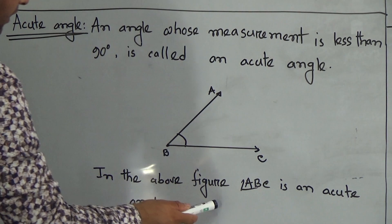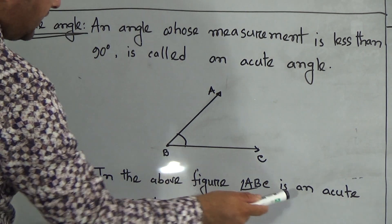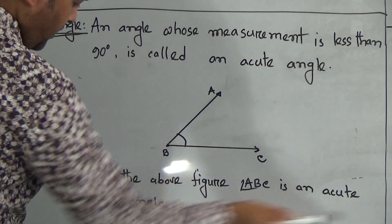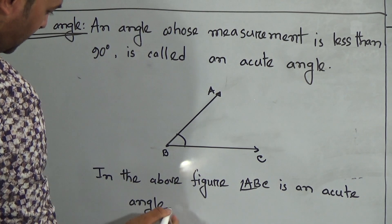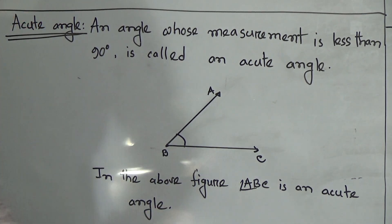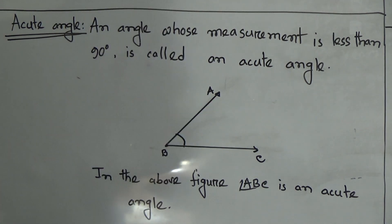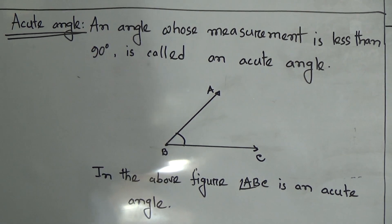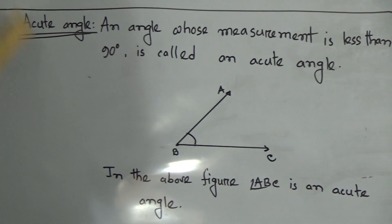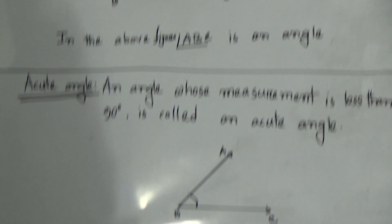In the above figure, ABC is an acute angle. My dear students, hope you understood the definition of angle and acute angle.